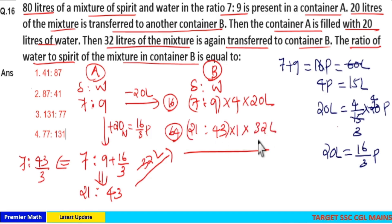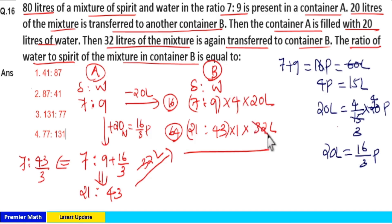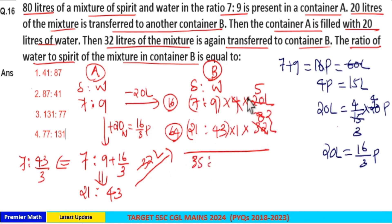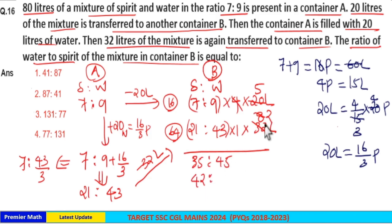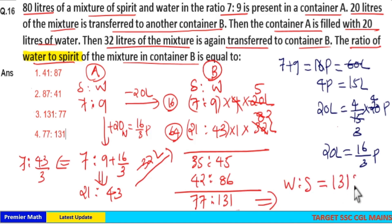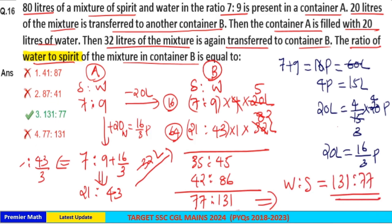Now cancel the terms: 4 goes 8 times into 32 and 5 times into 20, then 4 goes 2 times into 8. This gives 7 times 5 equals 35 and 9 times 5 equals 45 for the first part; 2 times 21 equals 42 and 2 times 43 equals 86 for the second. Adding: 35 plus 42 equals 77 (spirit) and 45 plus 86 equals 131 (water). So water to spirit ratio is 131:77. Option 3 is your answer.